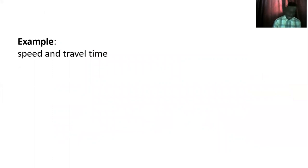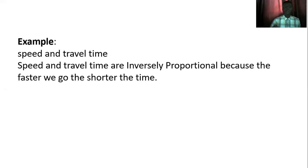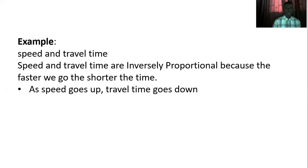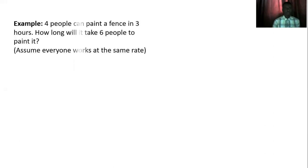Let's illustrate with speed and travel time. Speed and travel time are inversely proportional because the faster we go, the shorter the time to arrive at our destination. As speed goes up, travel time goes down; and as speed goes down, travel time goes up.